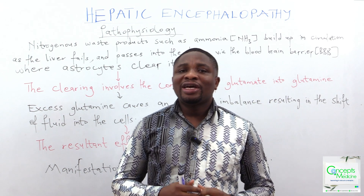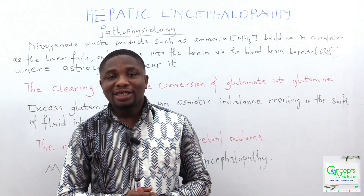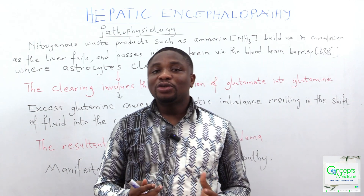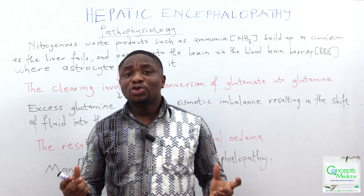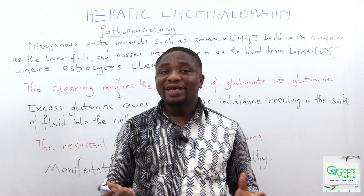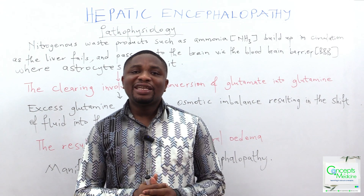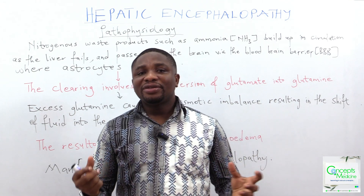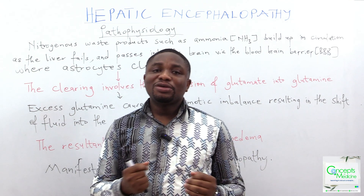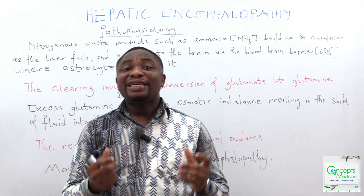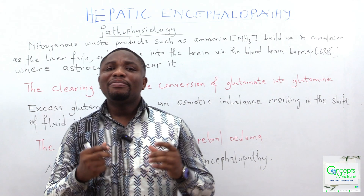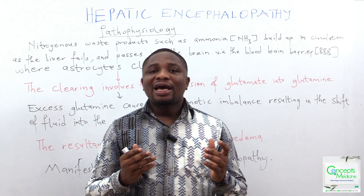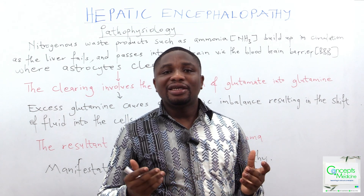When we are talking about hepatic encephalopathy, you should know that it has to do with liver failure. In that case, we will see that nitrogenous waste products, which are supposed to be cleared or detoxified by the liver, build up in circulation as the liver fails. And as they build up in circulation, they then tend to pass through the blood-brain barrier into the brain, where astrocytes clear it.